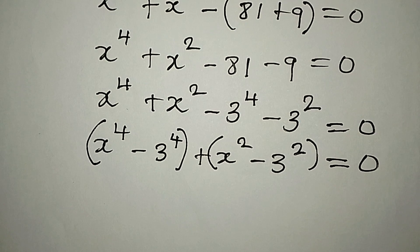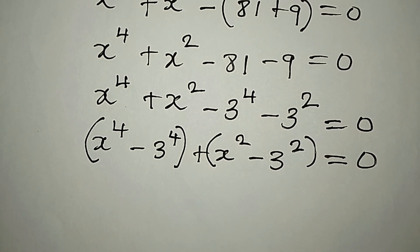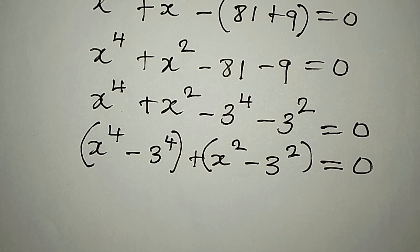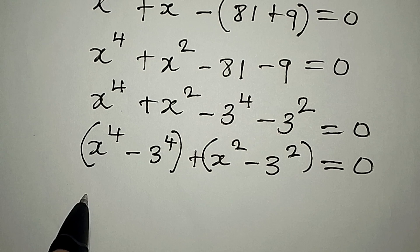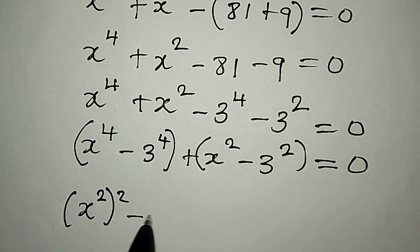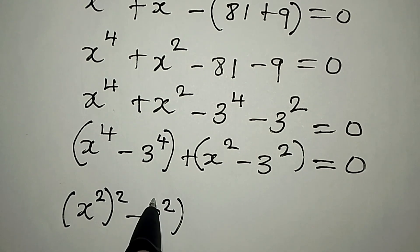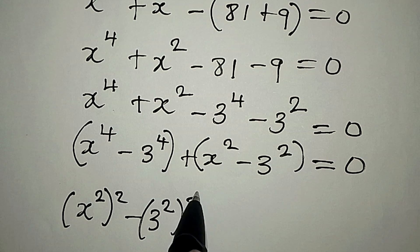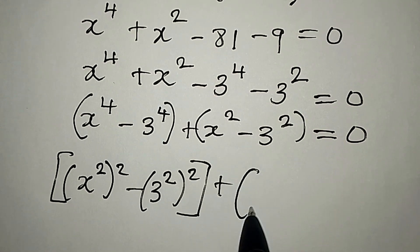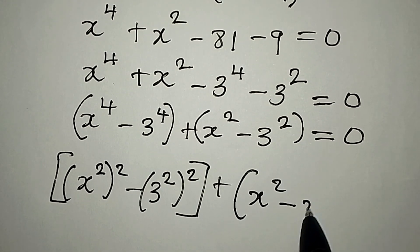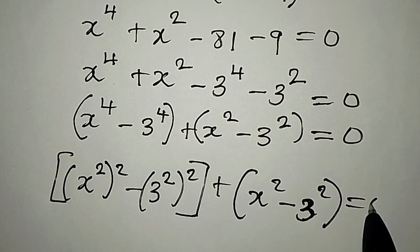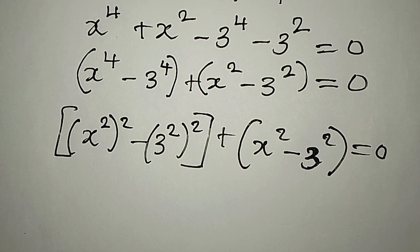We're going to break this down so that we get x to the power of 2, to the power of 2, minus 3 to the power of 2, to the power of 2. Then on this side we have plus, open bracket, x to the power of 2 minus 3 to the power of 2, equal to zero. Now we can apply the difference of two squares.